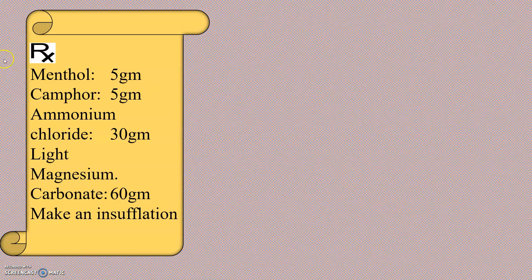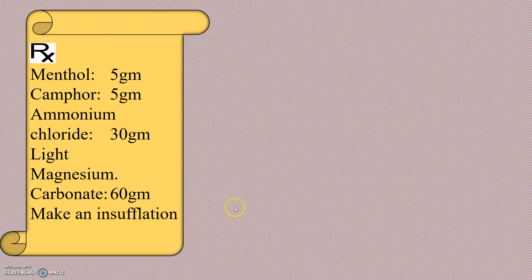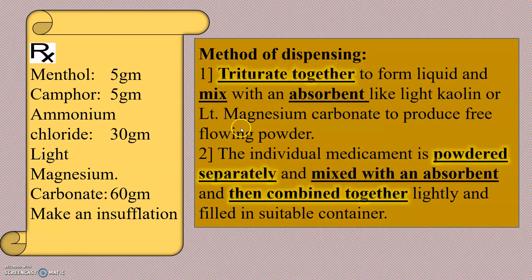In this prescription, the ingredients are menthol, camphor, ammonium chloride, and light magnesium carbonate, and we have to make an insufflation. This prescription can be dispensed by two methods. The first method is by triturating together all the ingredients — menthol, camphor, and ammonium chloride — which will form a liquid, and then mixing it with an absorbent such as light kaolin or light magnesium carbonate to produce a free-flowing powder.